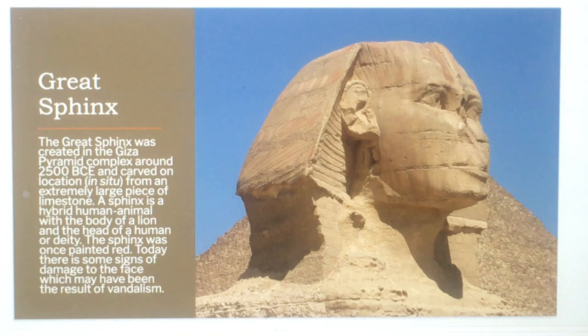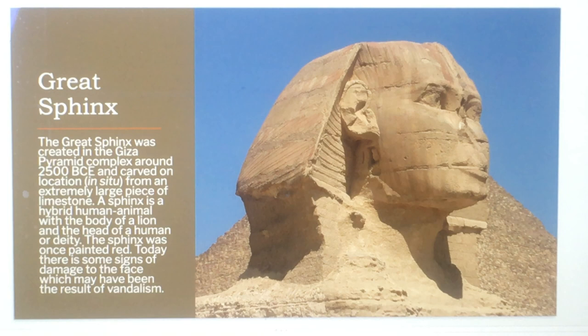The Sphinx was once painted red. Today there are some signs of damage to the face, which may have been the result of vandalism. That was pretty common — they would often knock the nose off sculptures during wars to insult, a 'cut off the nose to spite the face' kind of attitude.